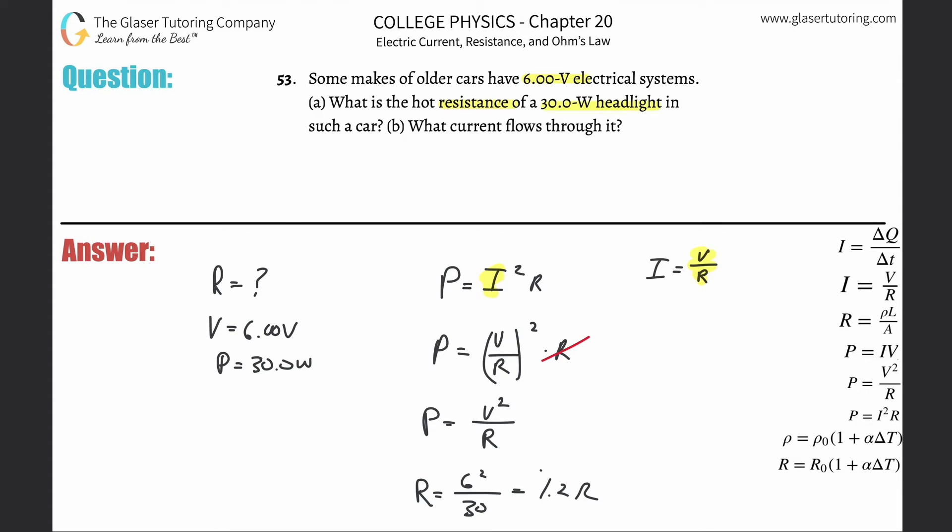So then letter b asks, it's asking for the current. That should be straightforward. We could do this in a whole bunch of ways. Why don't we use Ohm's law again? That current is equal to the voltage over the resistance. Now what we have is, the voltage again is six and the resistance here was 1.2.